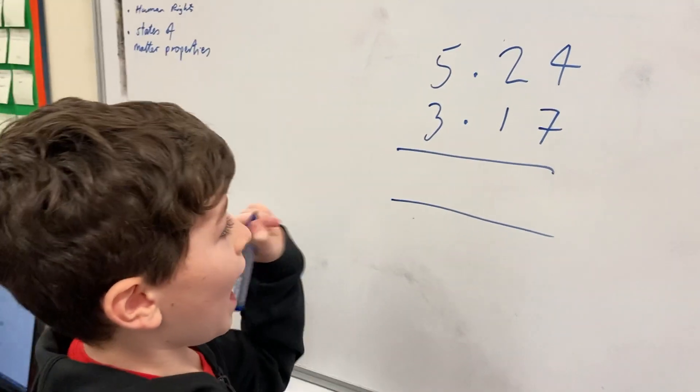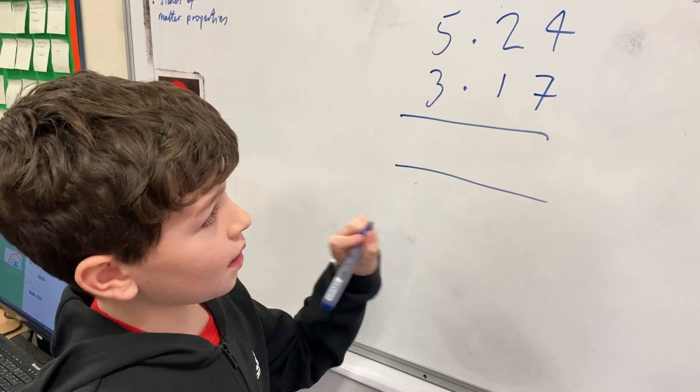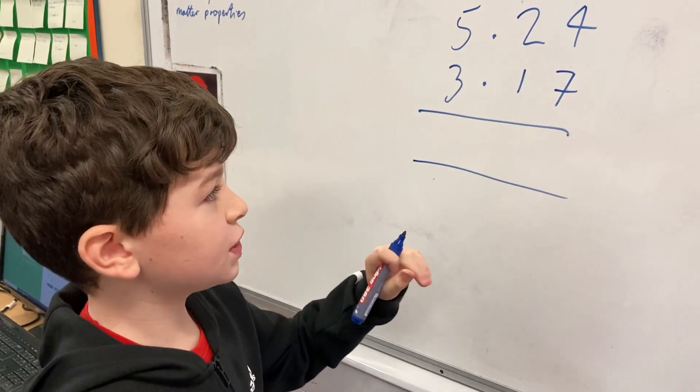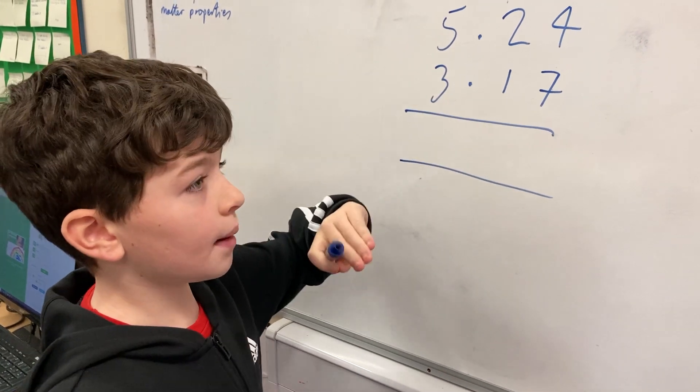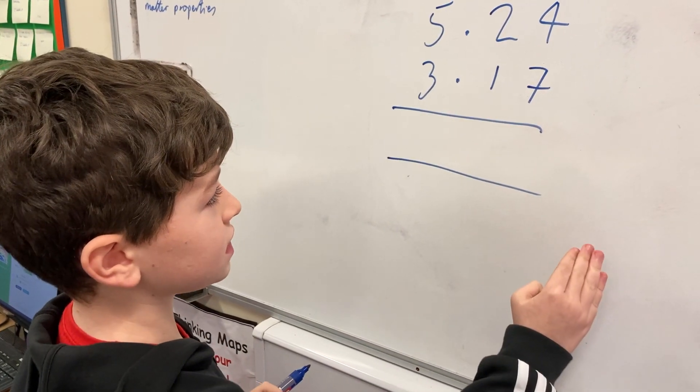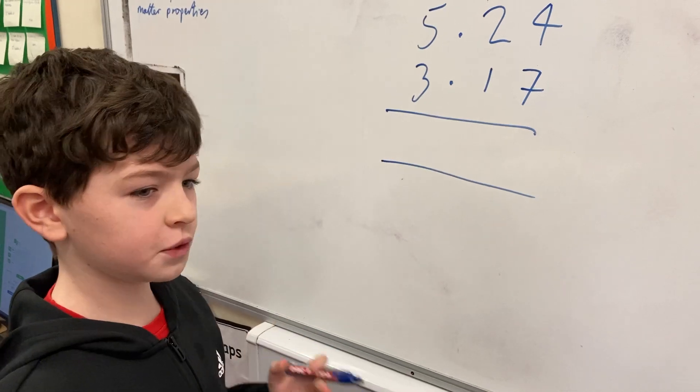This is how we add decimal numbers. We need to make sure we set it out correctly with the decimal points lined up, and remember to always start on the right hand side, otherwise it'll get confusing and too hard.